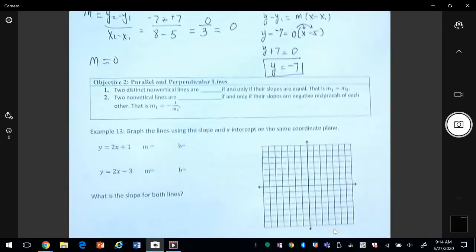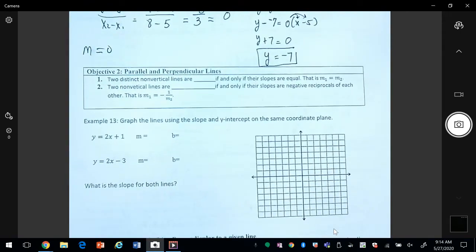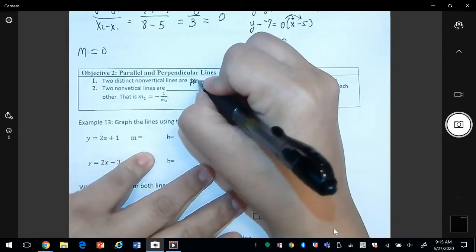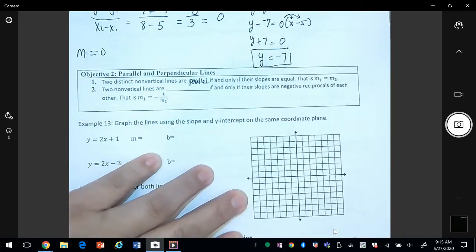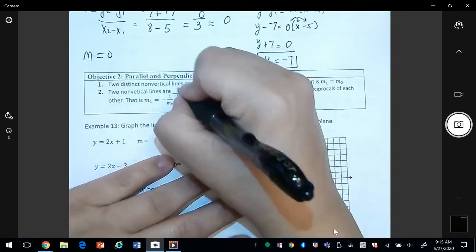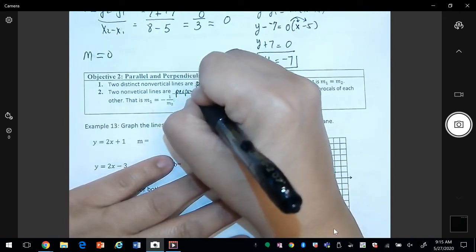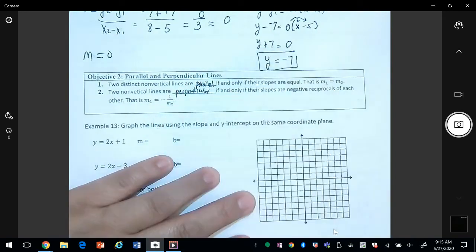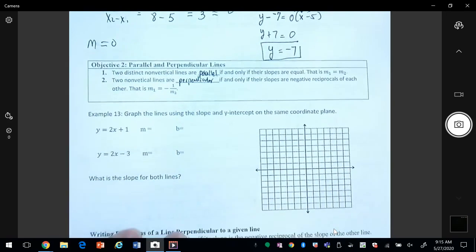Negative seven two. Distinct non-vertical lines are parallel if and only if their slopes are equal. Two non-vertical lines are perpendicular if and only if their slopes are negative reciprocals of each other, which I'll discuss here in a little bit.